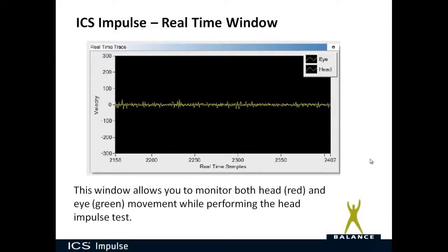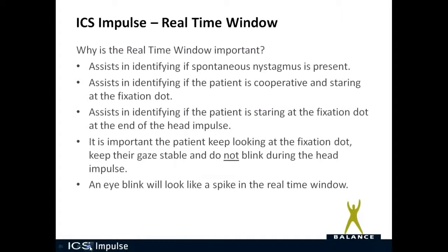When you're doing your head impulse, make sure you're looking at the real-time window. This window allows you to monitor both head in red and eye in green while performing the head impulse test. The real-time window assists in identifying if spontaneous nystagmus is present, if the patient is cooperative and staring at the fixation dot — if they're looking around, the green line will not be smooth — and if the patient is maintaining fixation at the end of the head impulse. It is important the patient keep looking at the fixation dot, keep their gaze stable, and not blink. An eye blink will look like a spike in the real-time trace window.